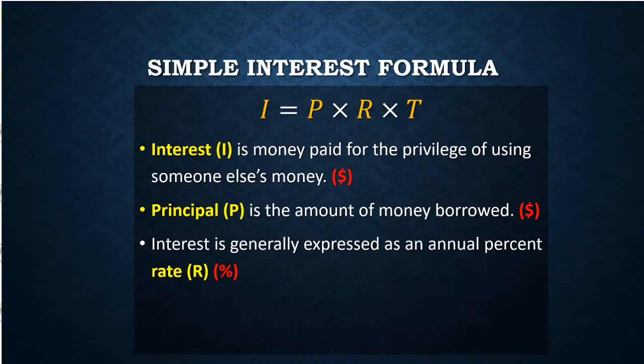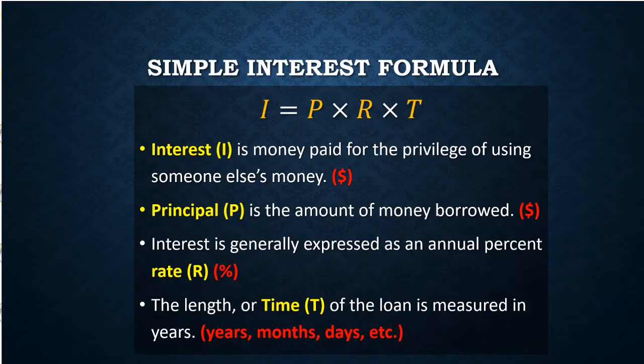R is that annual percentage rate. It's always a percent, and T stands for term or time — the length of the loan — and it's measured in some period of time: years, months, days, something along those lines.